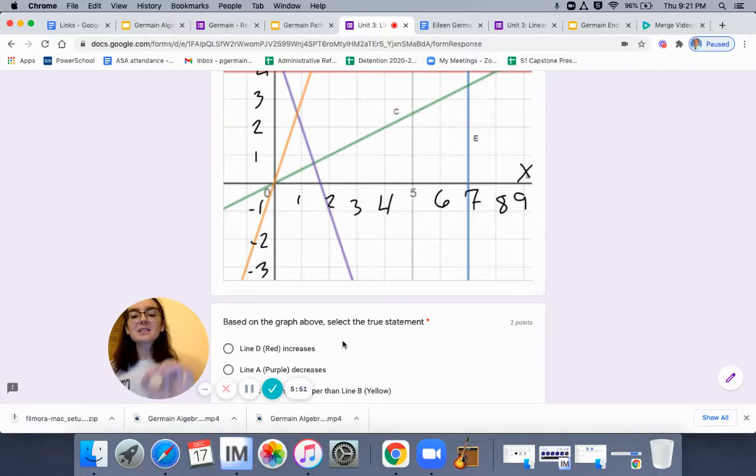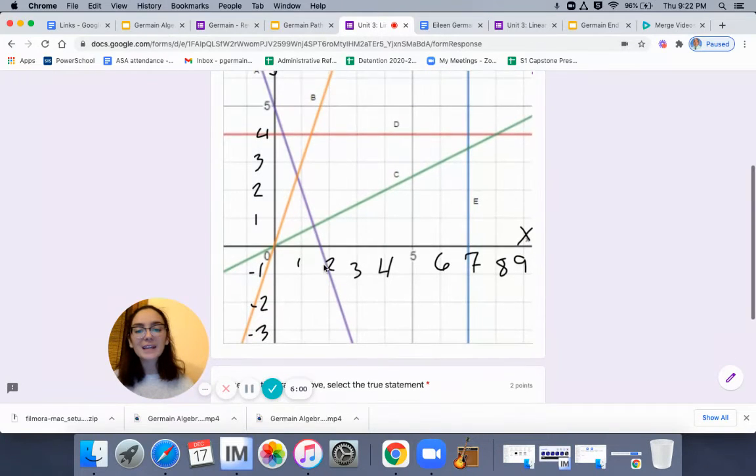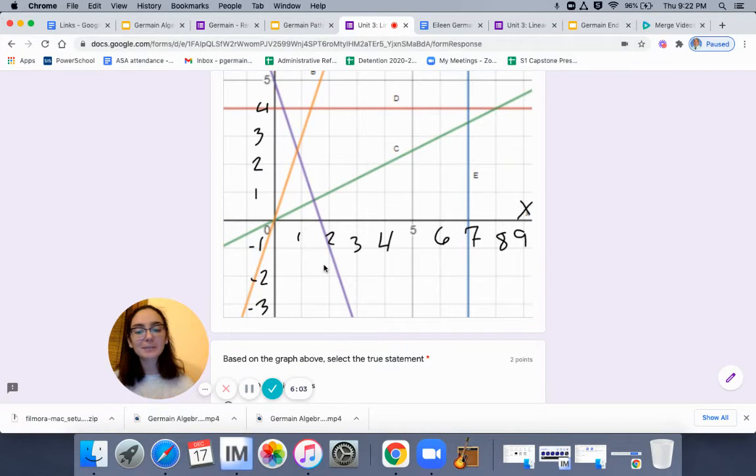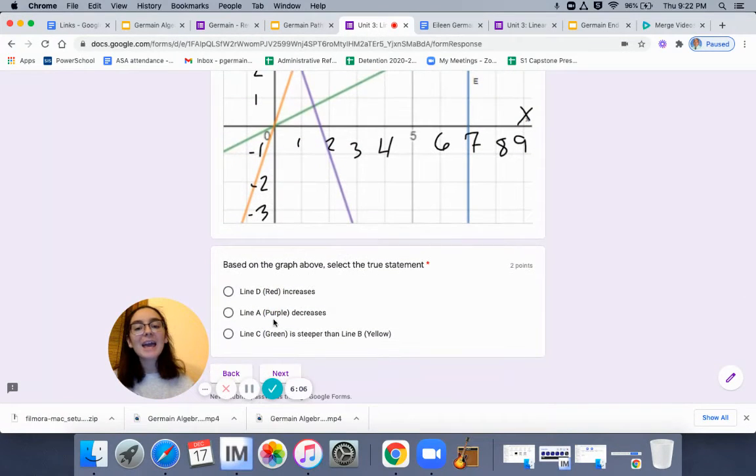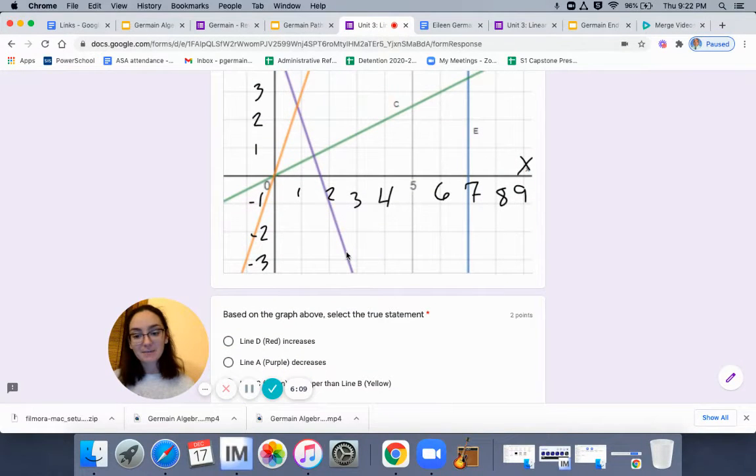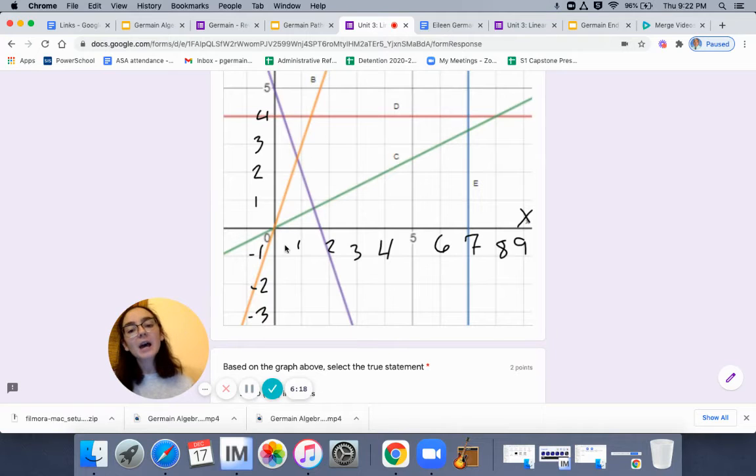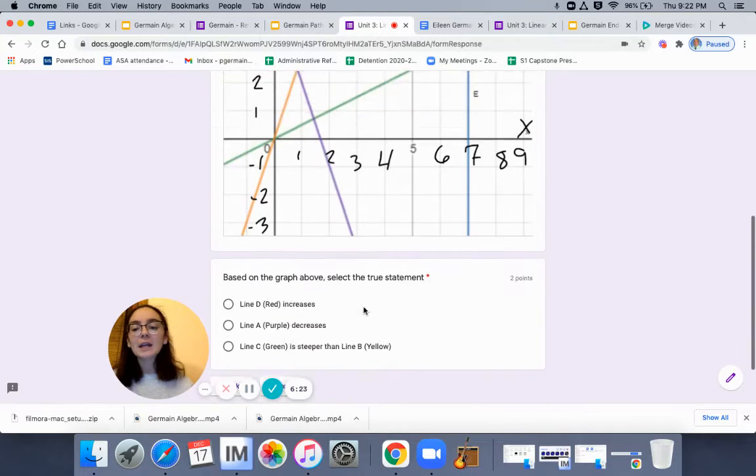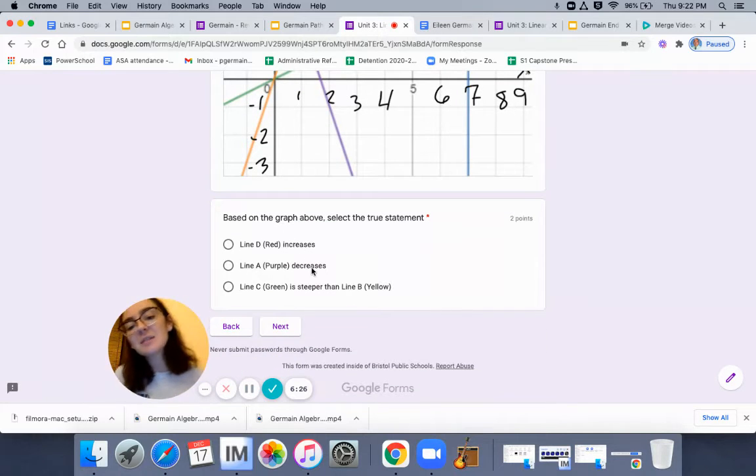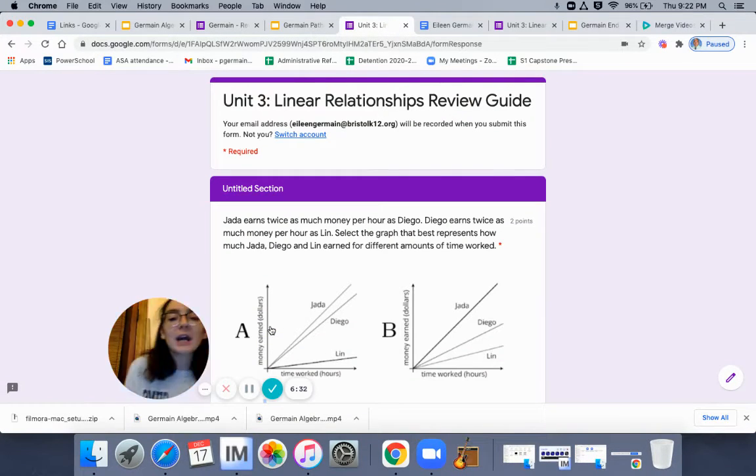Based on the graph above, select the true statement. So one of these statements are true. Line D, the red line, is increasing. Is that true? Line D, the red line, is increasing. Is line A, the purple line, decreasing? Decreasing means going down. Line C, the green line, is steeper than line B, the yellow line. Is that true? Is green steeper than the yellow line? If that is true, then you select it. You select the statement that is true. I'm literally just going to select one. That's just how I roll.